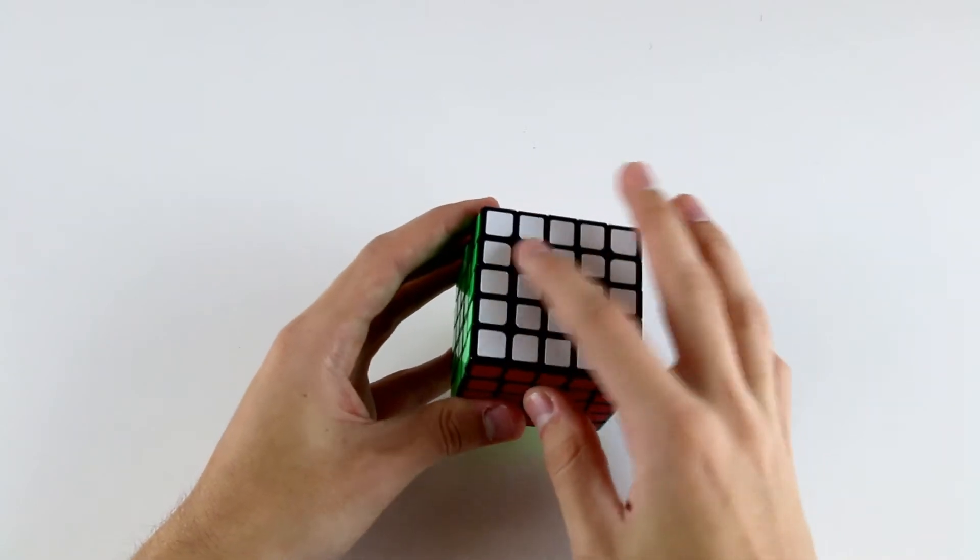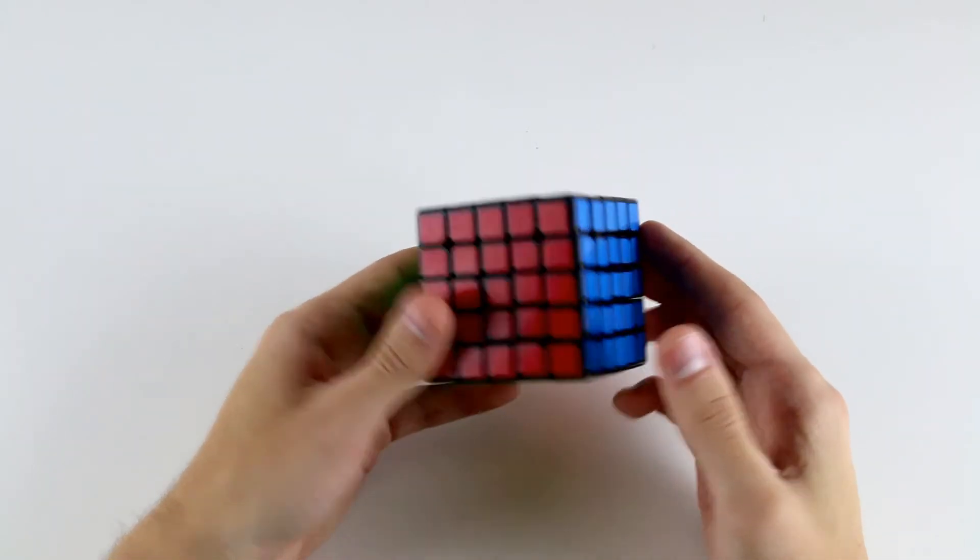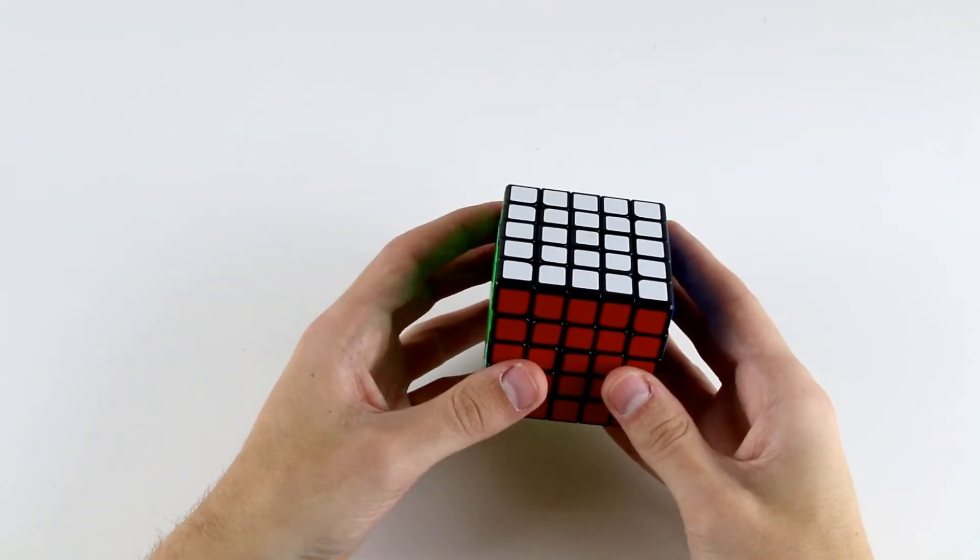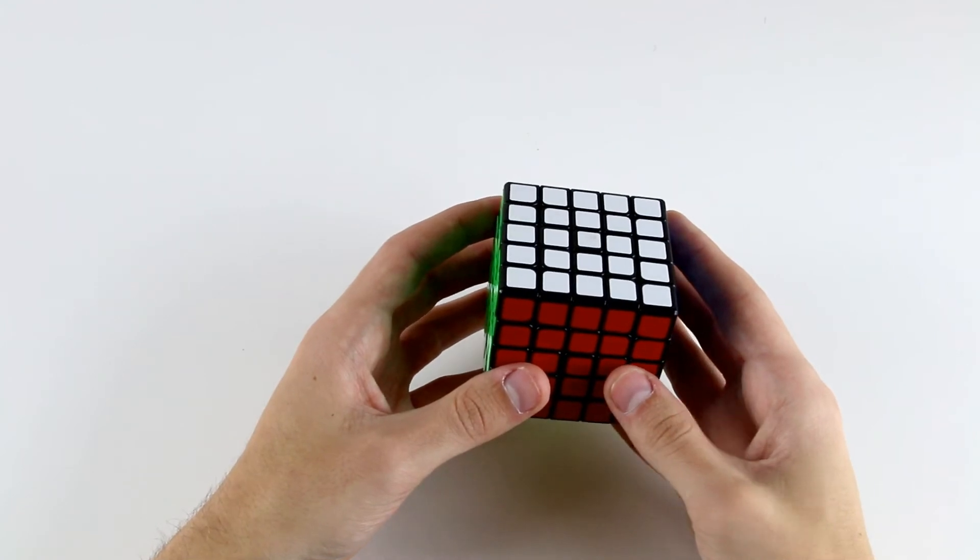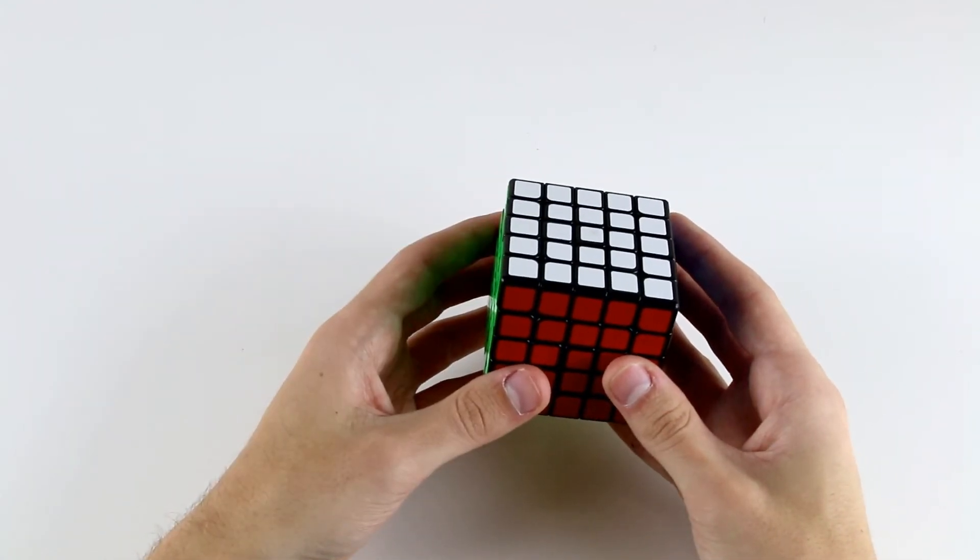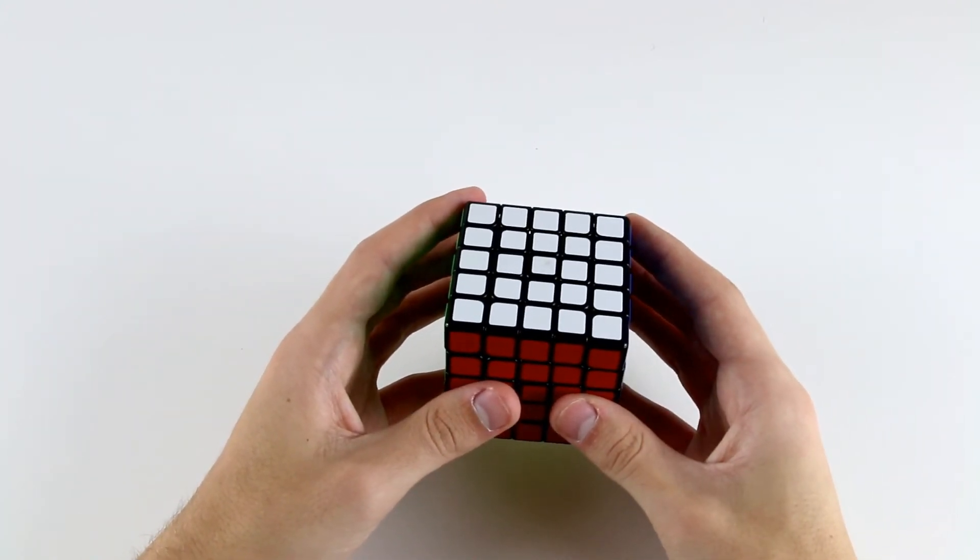After we solve all of our center pieces and pair up all of our edge pieces, we may encounter what's known as edge parity, but I'll describe that in the tutorial videos. After that, we will have reduced the cube to a simple 3x3 state, so we solve it as if it were a 3x3. Unlike on a 4x4 cube, we won't encounter any parities during our 3x3 stage.